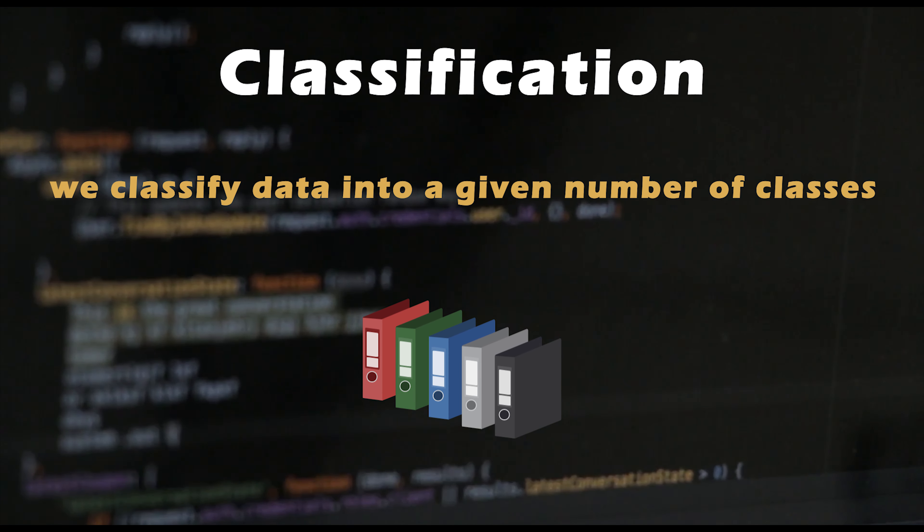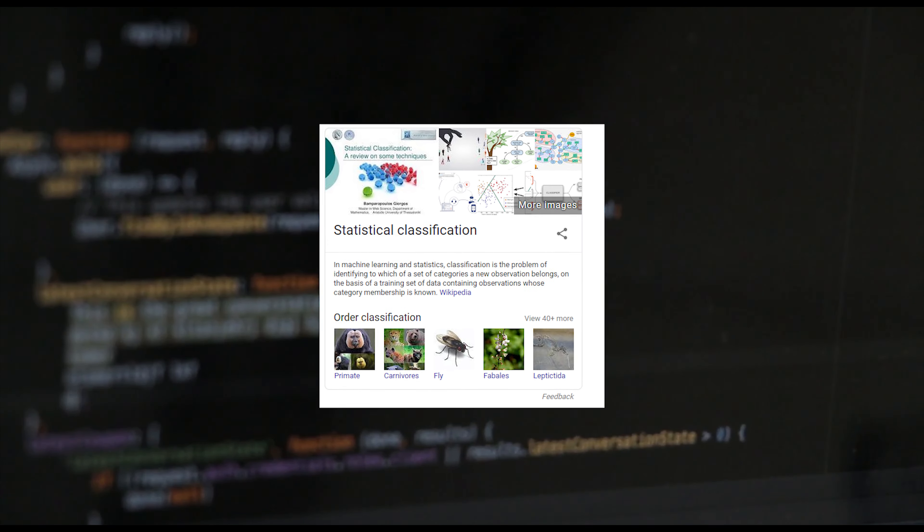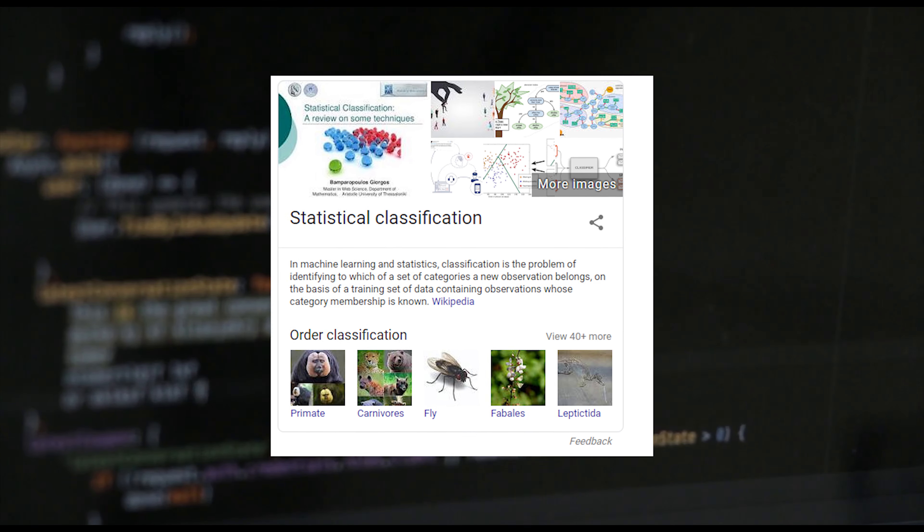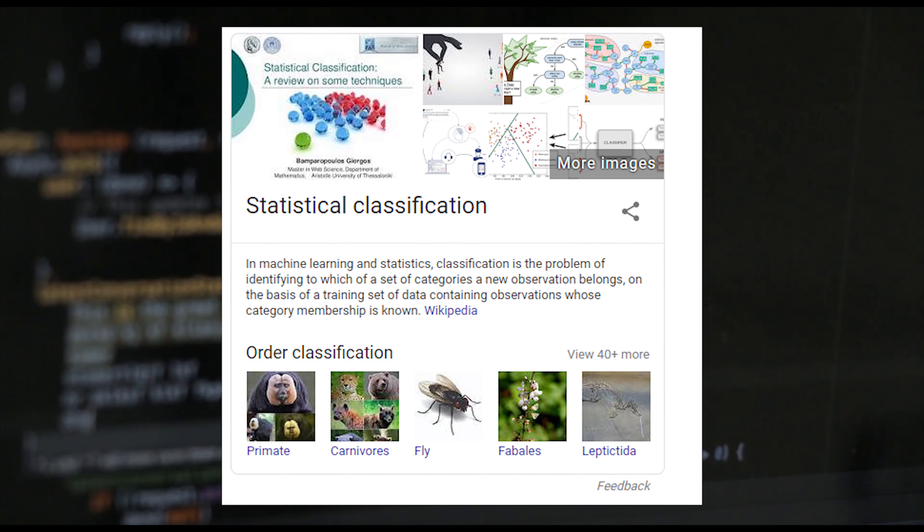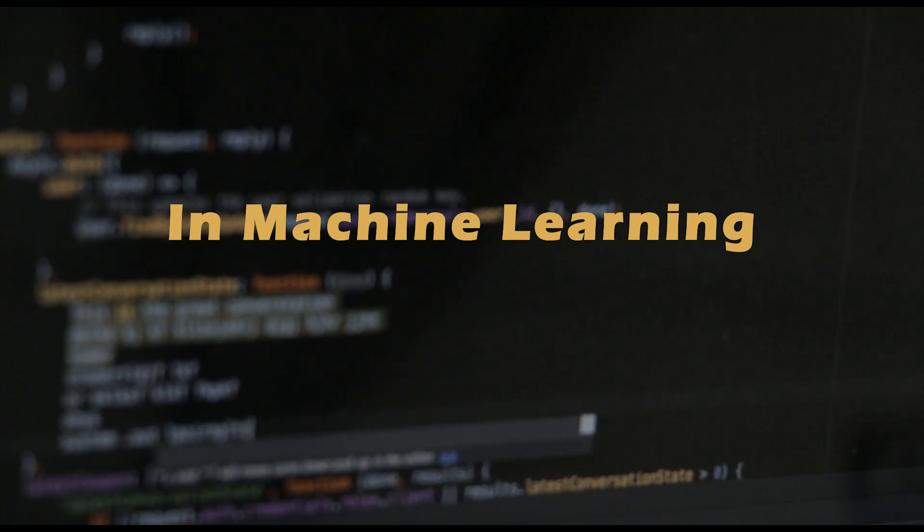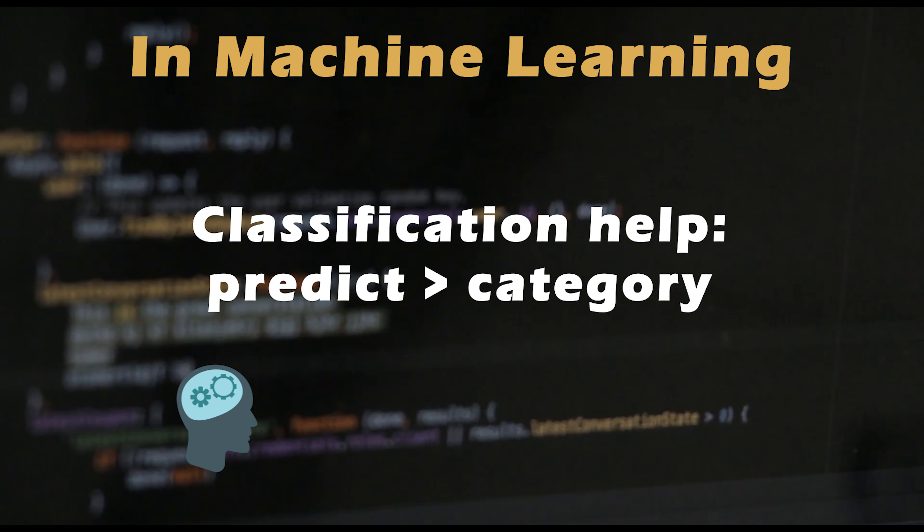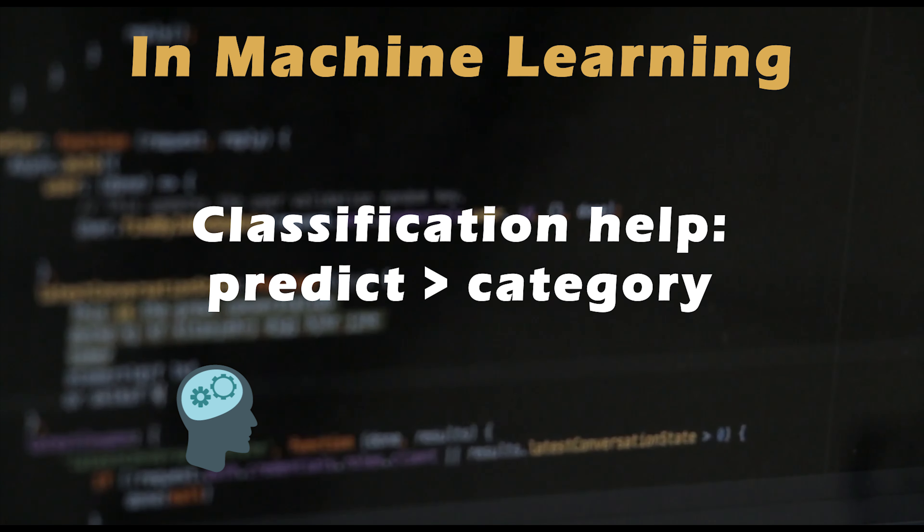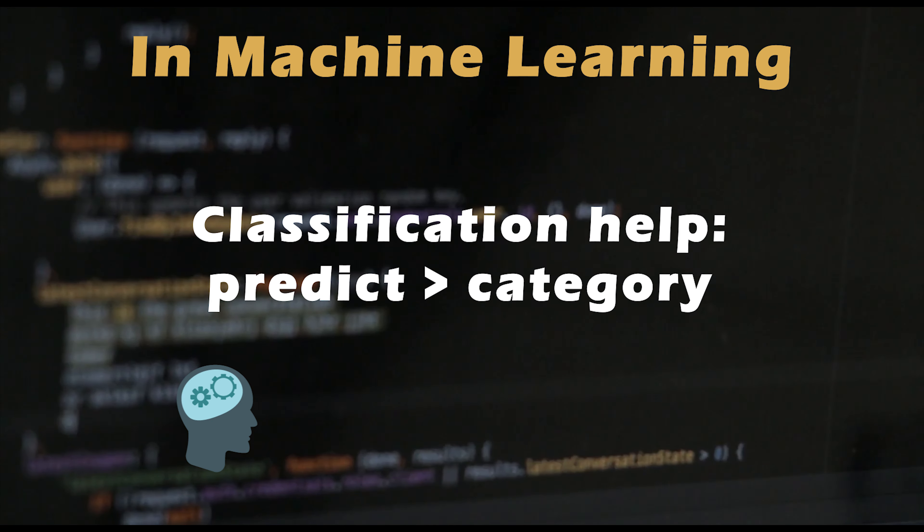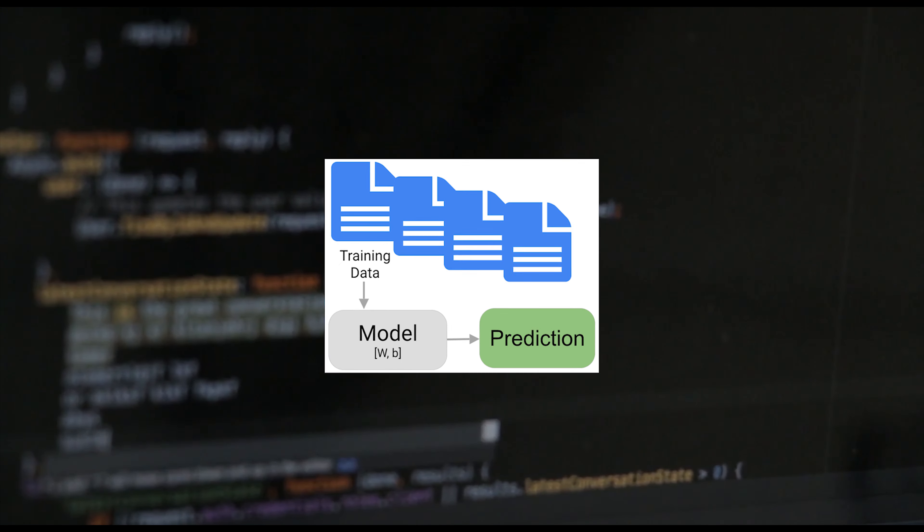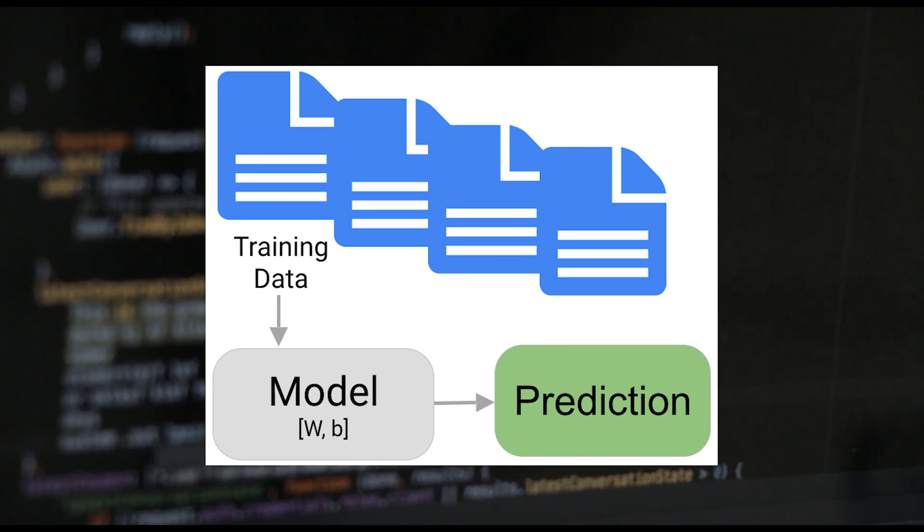The process of classification is one such technique where we classify data into a given number of classes. During classification, we arrange data into a fixed number of categories so that it can be used most effectively and efficiently. In machine learning, classifications solve the problem of predicting the categories of a given data point. We build the classification model based on training data set containing data points and the corresponding labels.